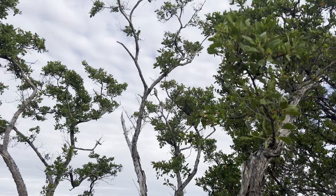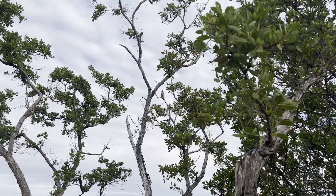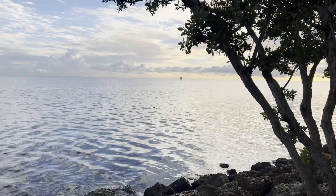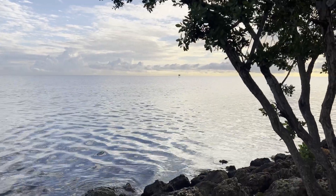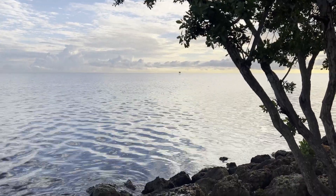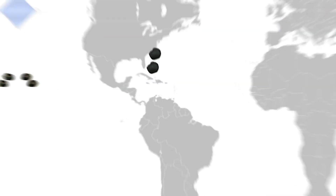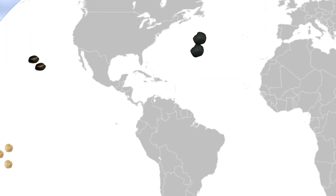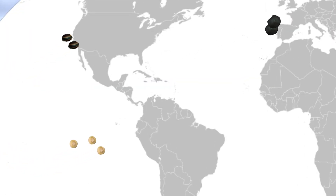So what exactly are sea beans? Actually, they're not beans, nor are they from the sea. They are the fruits or seeds of tropical trees. When those seeds mature, they are dropped and get washed into streams and rivers by the rain, eventually making their way into the ocean where they float about, carried on the ocean currents until they get washed up on shore.